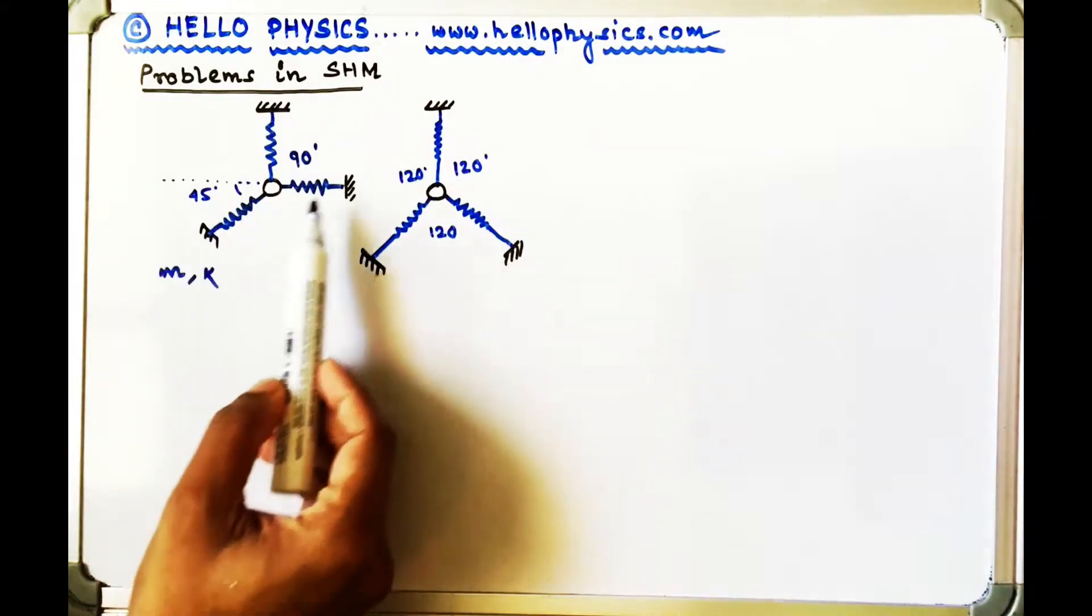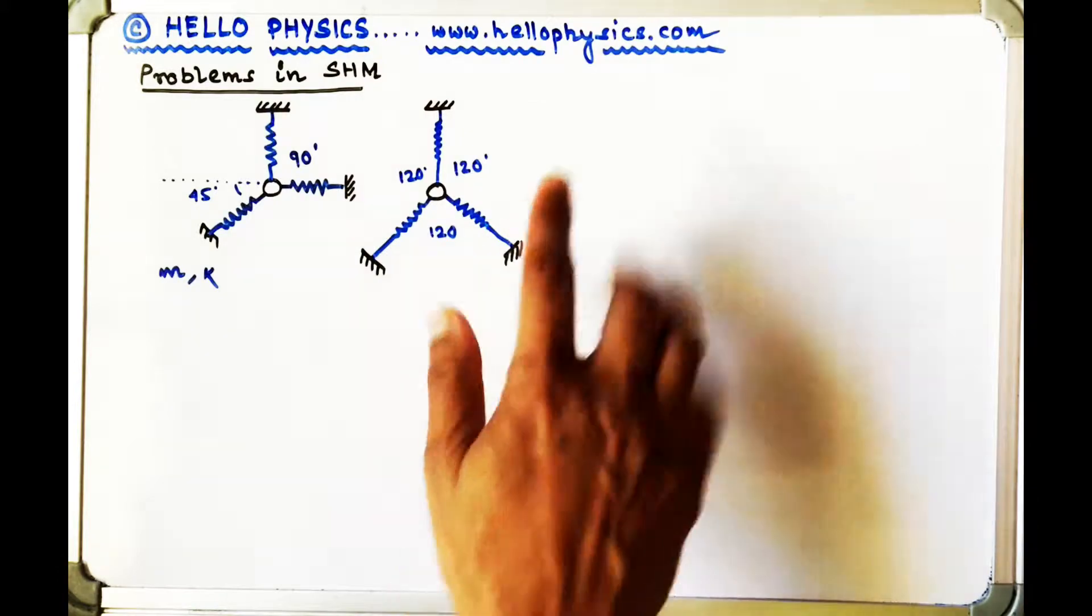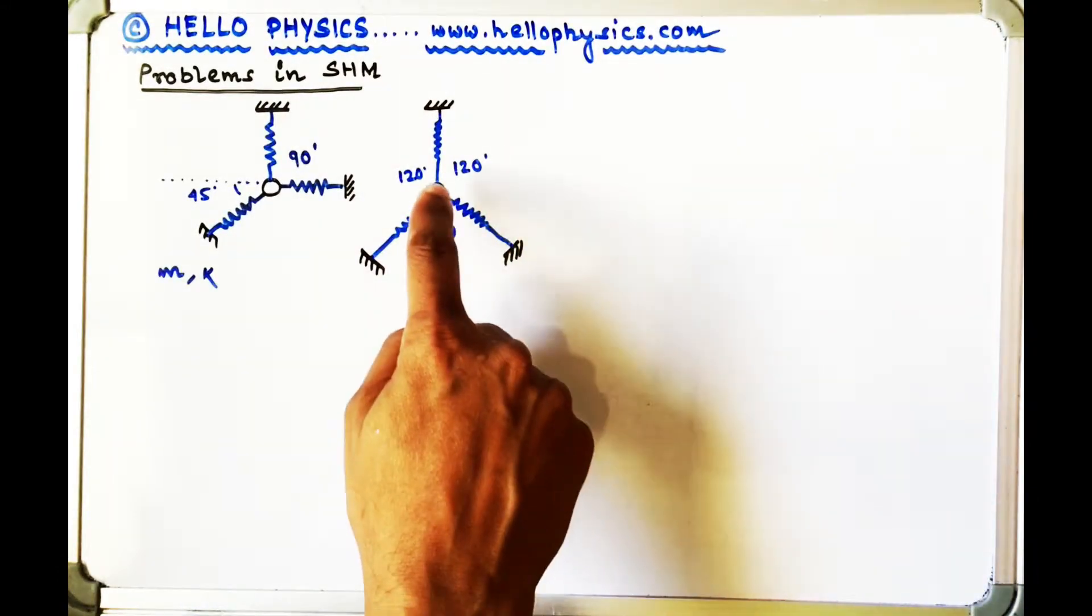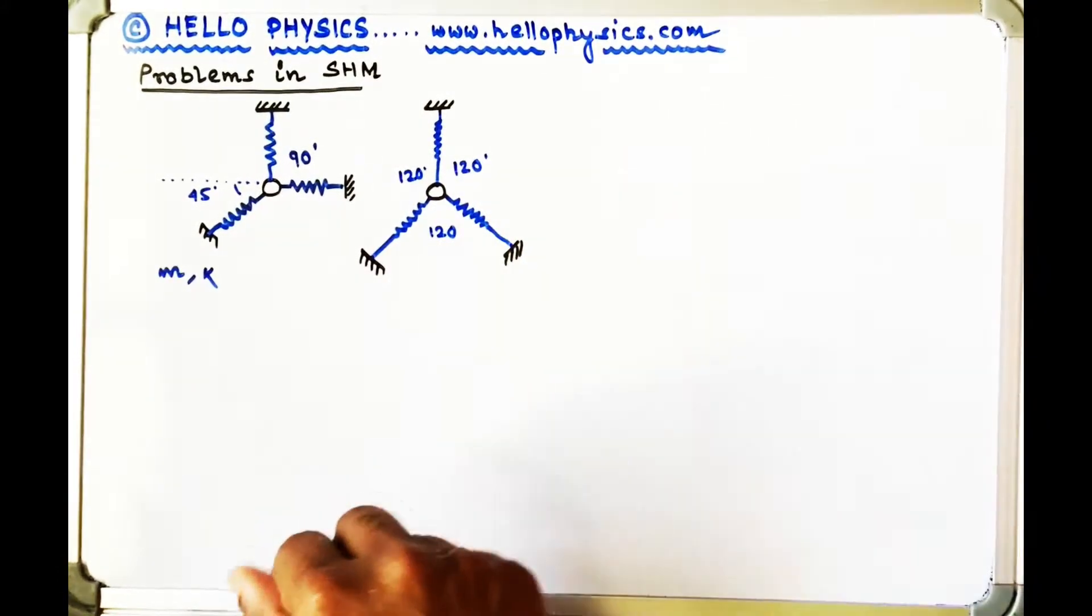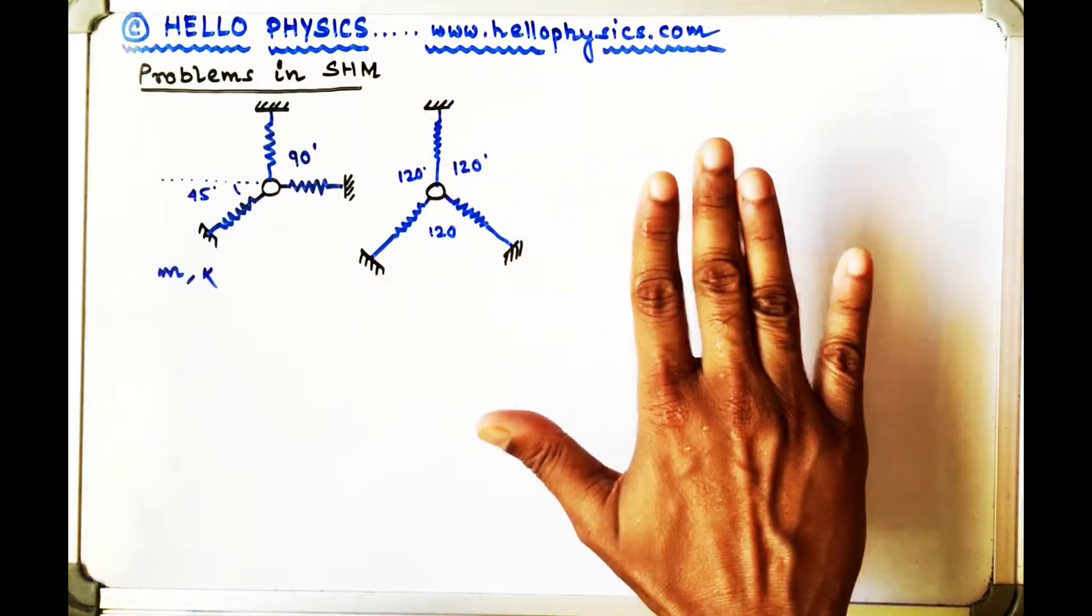Now, as you can see in both these setups, these three springs and the mass setups are in the horizontal plane. So all of them are at the same horizontal level.